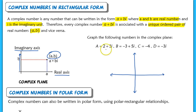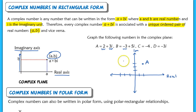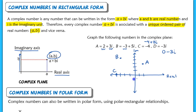For this first point, 2 plus 3i, the real part is 2 and the imaginary part is 3i. So I go over 2 units on the real axis and up 3 units on the imaginary axis — this is point A. For point B, the real part is negative 3, so I go left 3 and then up 5. For point C, negative 4 plus 0i: every real number can be written as a complex number with an imaginary part, so that's negative 4 on the real axis, up 0. Point D is 0 minus 3i, so just go down 3 units on the imaginary axis.